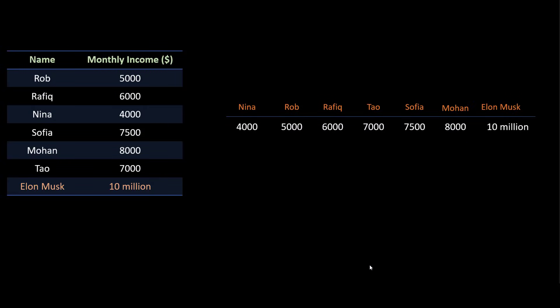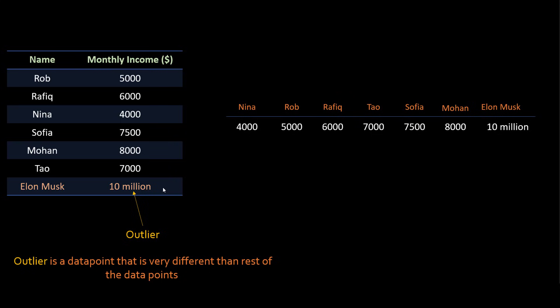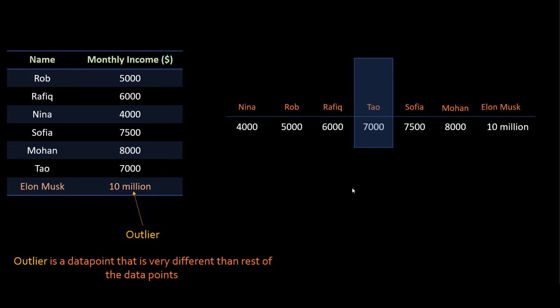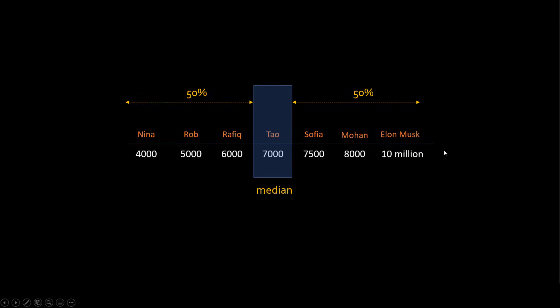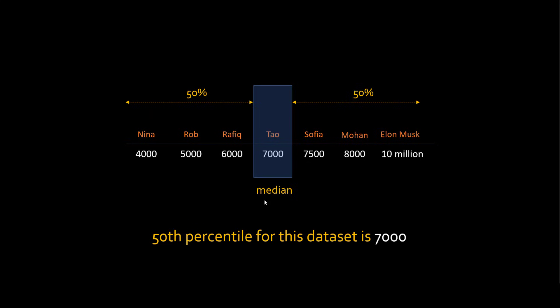Now let's look at the same income example once again. Here, $10 million is clearly an outlier — a data point that is very different from the rest of the data points. Let's look at how you can remove this outlier. In order to understand that, we need to understand the concept of percentile. Here again, I have sorted the values in ascending order. You take the middle value, and what it shows is 50% of the data points are on the left side and 50% are on the right. So this is your median, and this median is nothing but the 50th percentile.